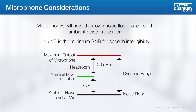There's one major additional concern when it comes to microphones. Microphones will have their own noise floor based on the room they're in, the amount of noise in the room, the quality of the microphone, etc. According to the Avixis standard for mic speech intelligibility, the minimum signal-to-noise ratio is 15 dB. If the ambient noise level at the microphone and your nominal level of the talker is less than 15 dB, then you're going to find you're in trouble.